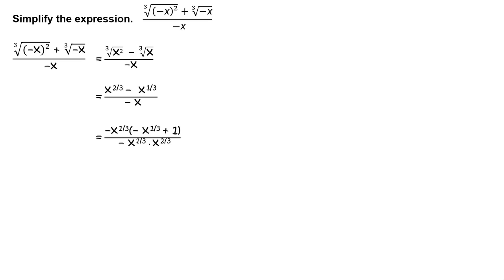In the numerator, factor out negative x raised to 1 third from both terms. You will get negative x raised to 1 third times the quantity negative x raised to 1 third plus 1.